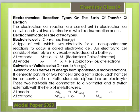At the cathode, which is rich in electrons, the metal ions gain electrons and are deposited as solid metal — this is reduction. At the anode, non-metals or metals lose electrons — this is oxidation. Cathode reduction and anode oxidation together make up the redox reaction. In the galvanic cell, the two half-cells are connected via a salt bridge containing potassium chloride.